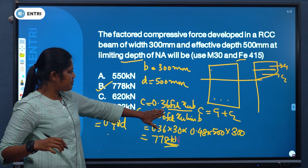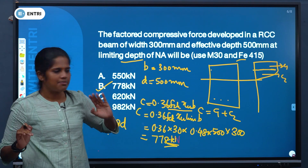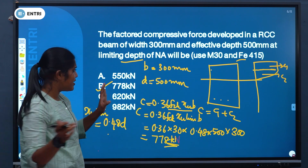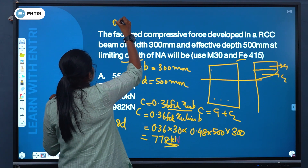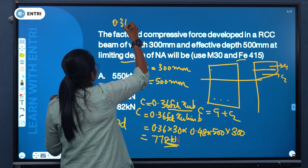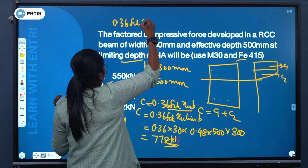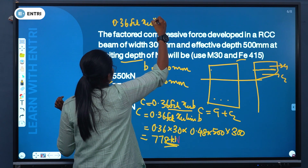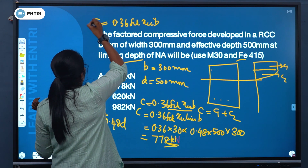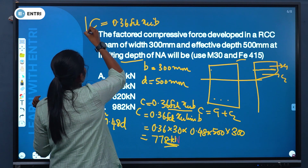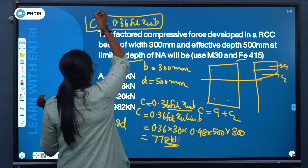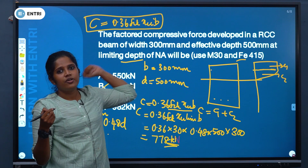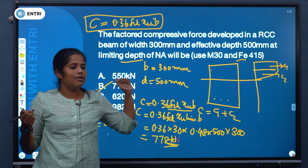To recap: the expression for XU limit with Fe415 is 0.48d. The total factored compressive force expression is C = 0.36 × fck × Xu × b.